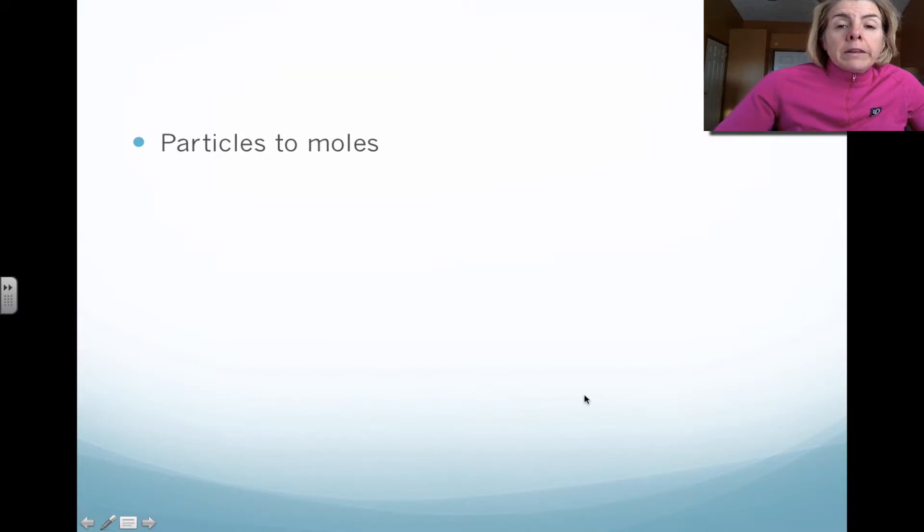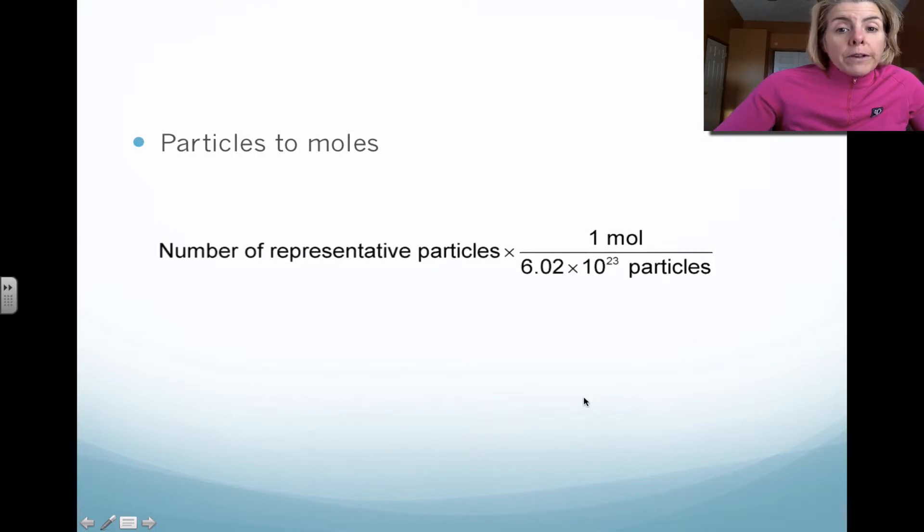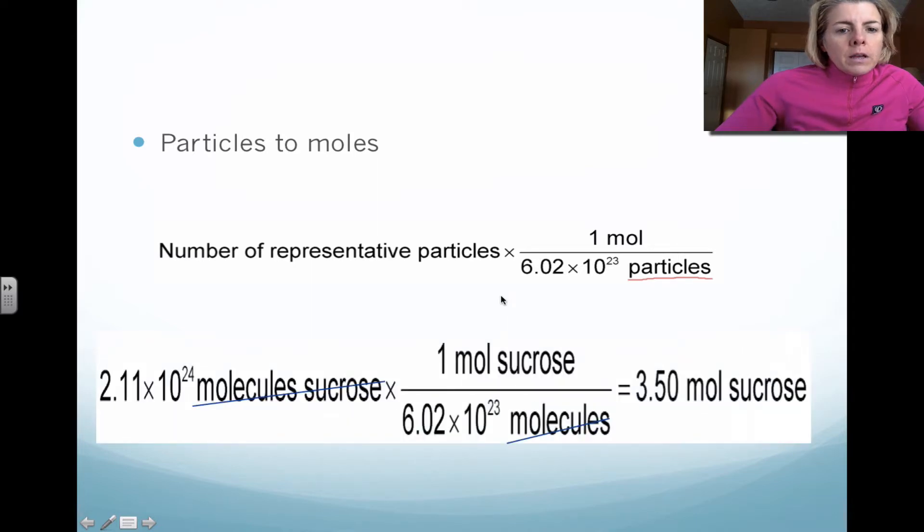Here's another example where we're going in the opposite direction. So we're going from particles to moles. And once again, we're going to use a conversion factor. Notice that the moles is on top, whereas Avogadro's number is on the bottom. And the reason why is we want to essentially cancel out units. That's why we flip the conversion factor. So here we have sucrose. And notice that we're trying to go from particles of a substance to moles of a substance. So we have the particles canceling out and we're left with moles. And once again, please remember that moles we're just lopping off the E as an abbreviation.